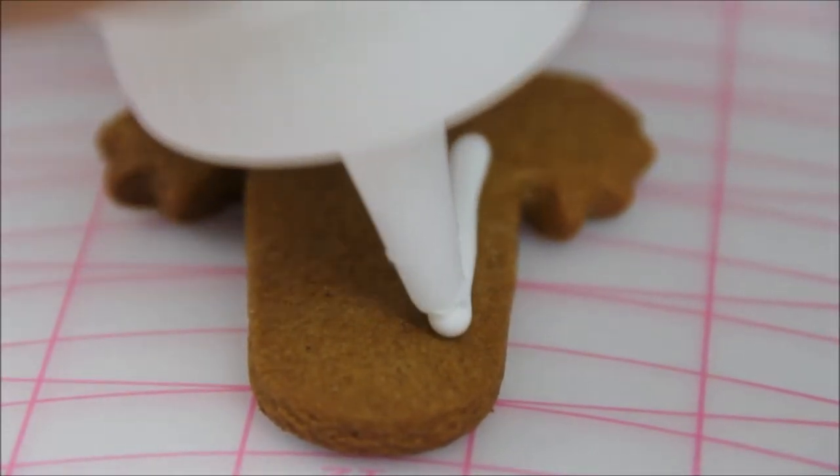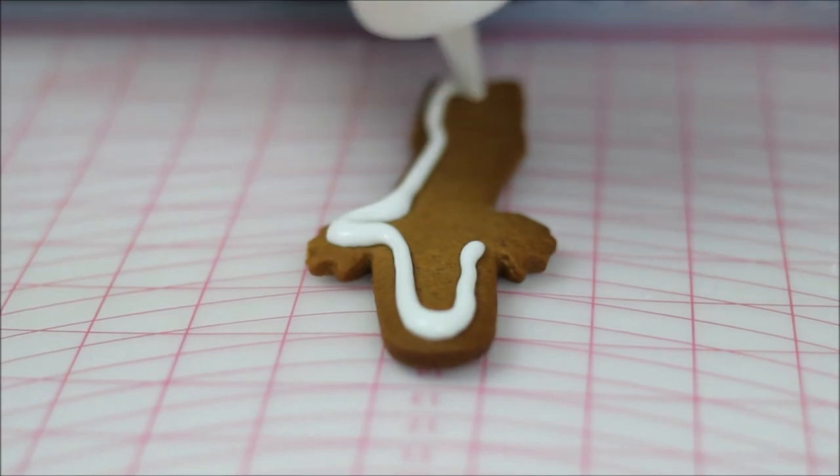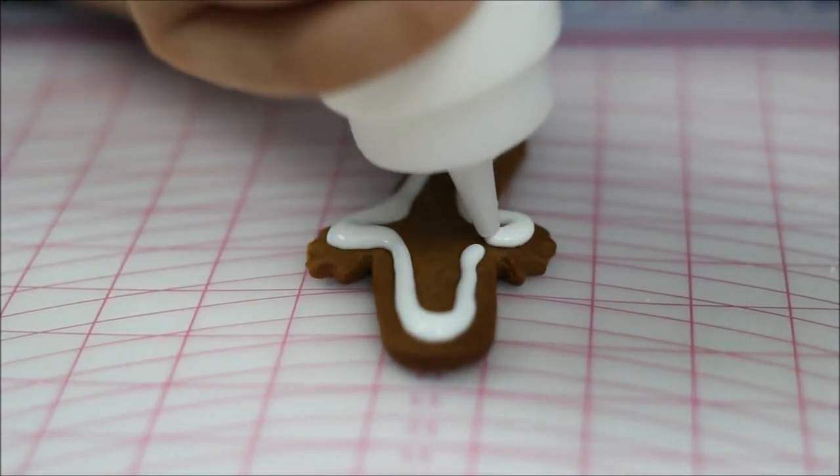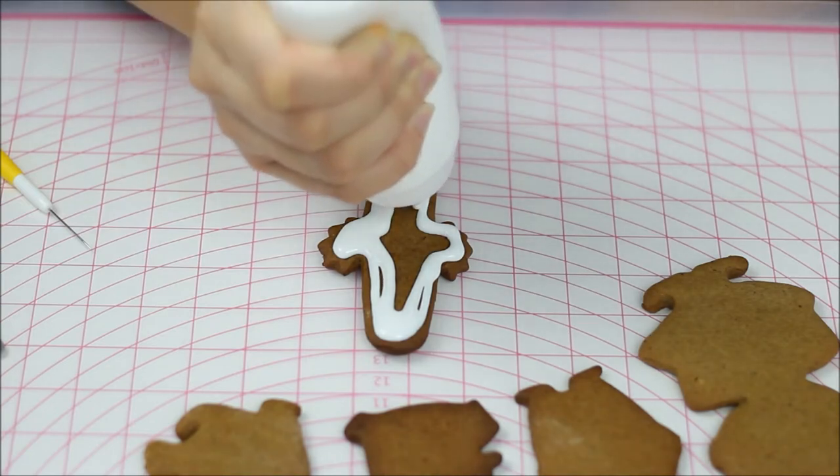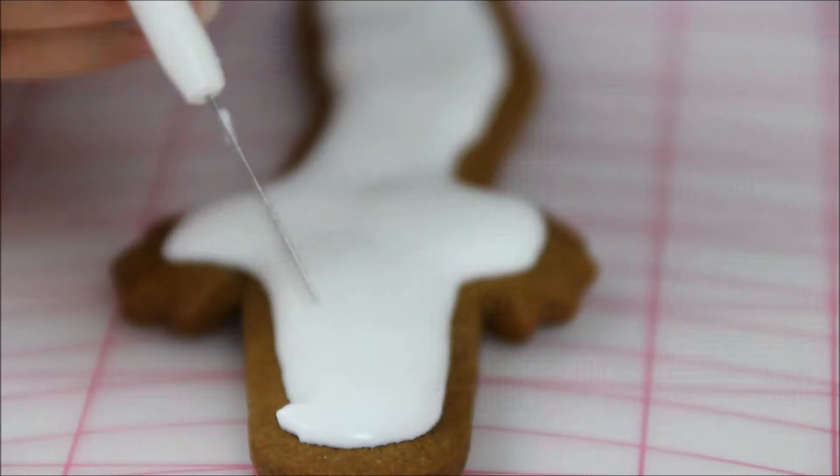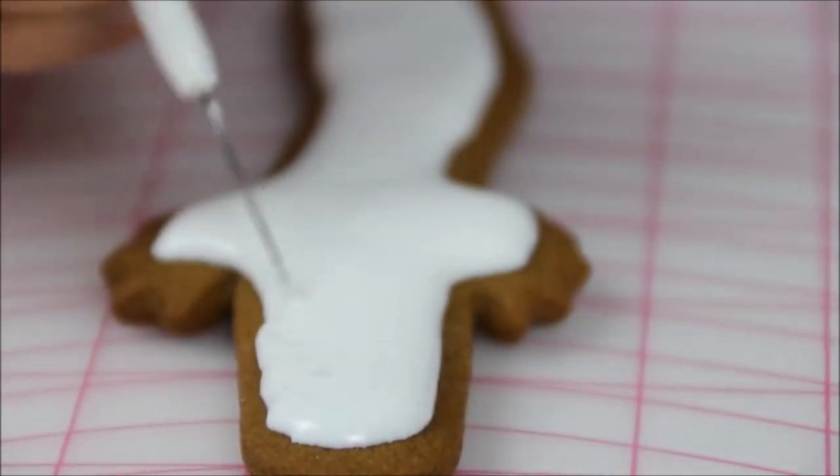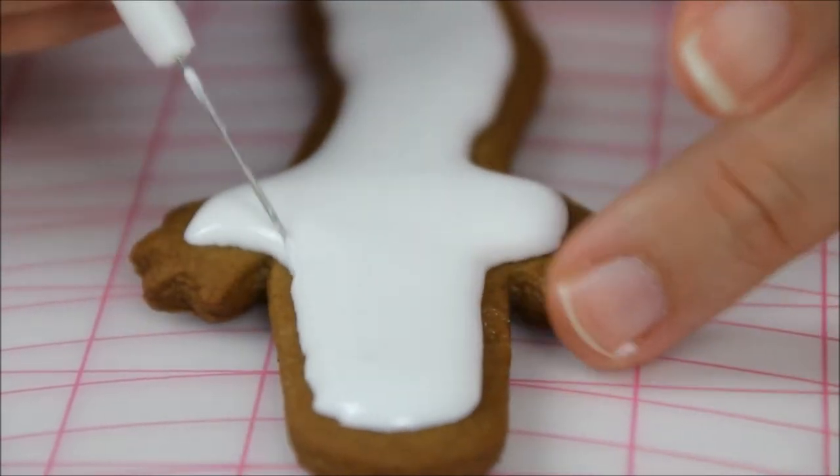Start outlining the Hatti Patteneer with white royal icing of piping consistency. Then with a needle tool fill the edges. Be careful not to overflow.